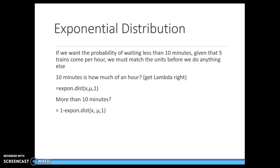So if we want to see what is the probability of waiting less than 10 minutes for the next train, given that five trains come per hour. First thing we have to consider in Poisson and in exponential is the units of time have to match. We can't be talking about minutes in one thing and hours in the other.